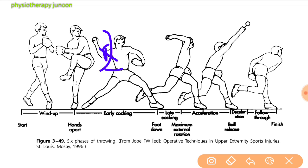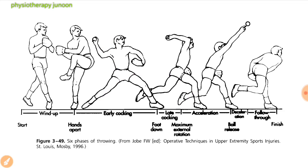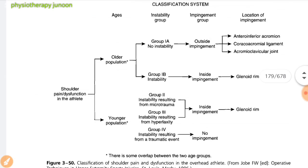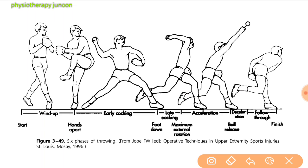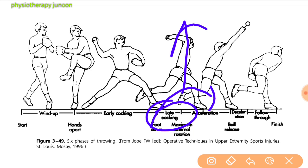In the late cocking phase, as the body rapidly moves forward, the dominant shoulder achieves maximal abduction and external rotation. Significant torque and forces are placed on the shoulder at this extreme range of motion.